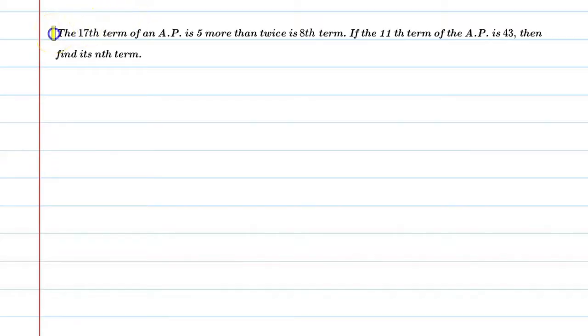Hello students, let's solve this question. The 17th term of an AP is 5 more than twice its 8th term. If the 11th term of the AP is 43, then find the nth term.